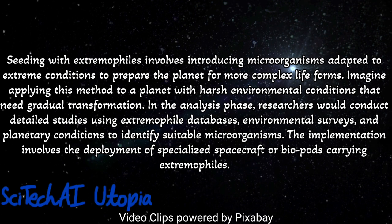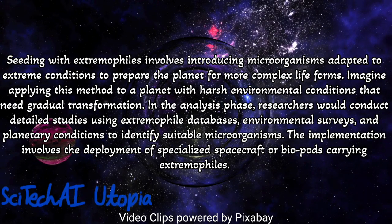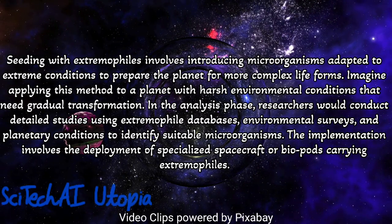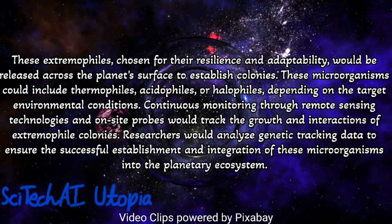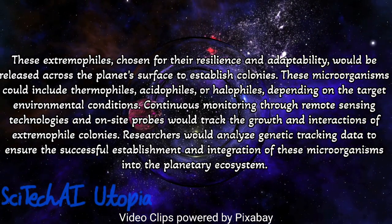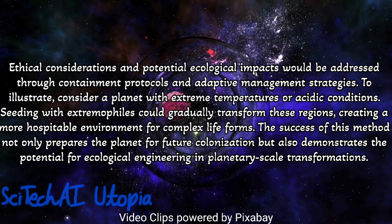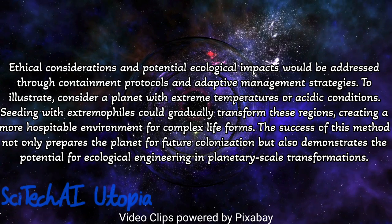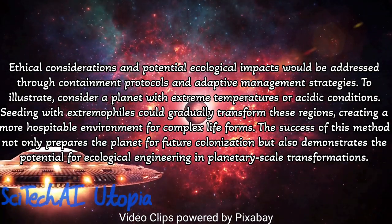Method 24: Seeding with Extremophiles. Conduct a comprehensive analysis of the target planet's surface conditions, including temperature extremes, radiation levels, and soil composition. Identify extremophilic microorganisms on Earth that exhibit resilience to environmental conditions similar to those on the target planet. Develop a strategy to introduce and cultivate extremophiles on the planet, potentially using bioengineered methods to enhance their adaptability and functionality. Implement controlled release mechanisms, potentially through robotic missions or biopods, to disperse extremophiles across various regions of the planet's surface. Establish monitoring systems including genetic tracking and ecological surveys to assess the impact on soil quality, nutrient cycling, and overall ecological balance.